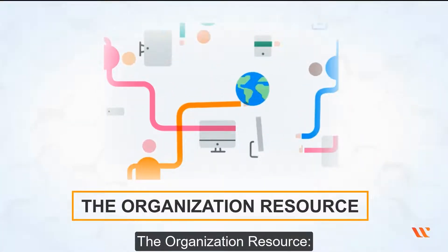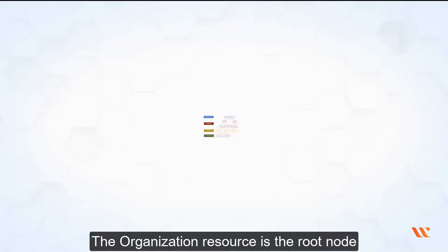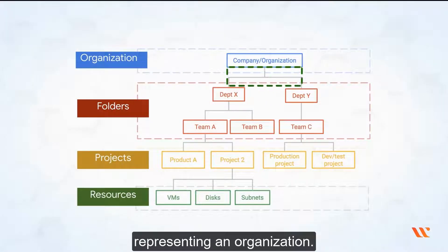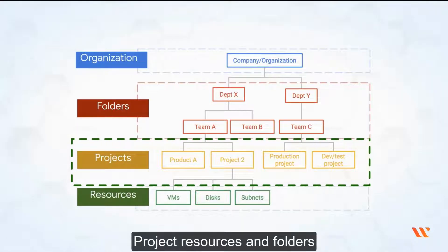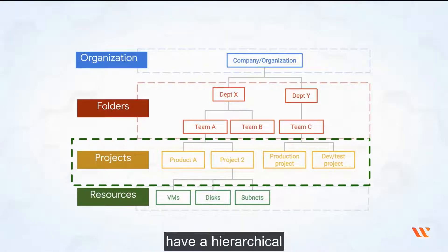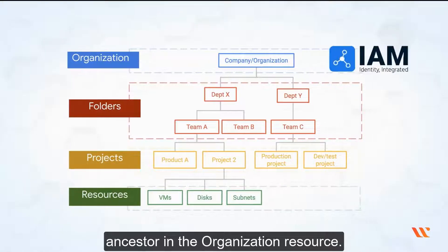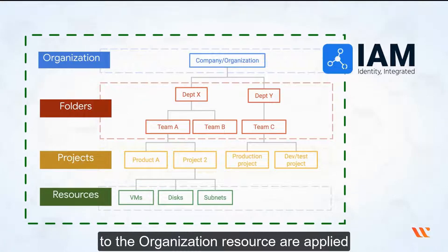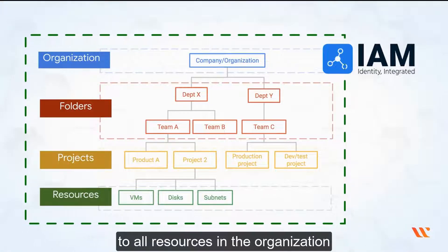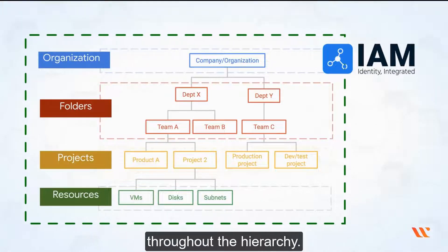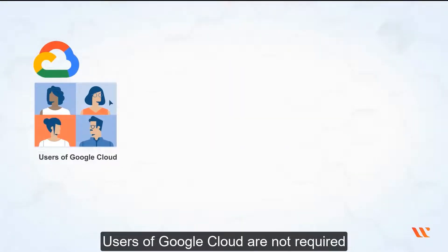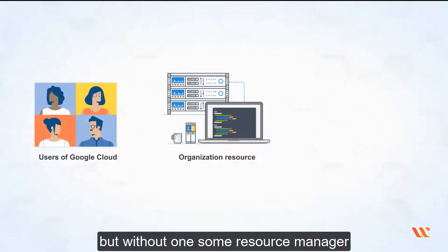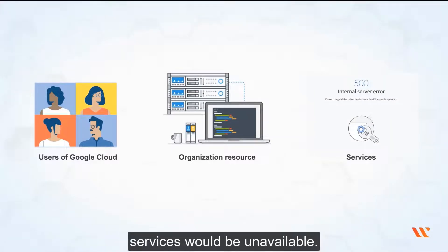The organization resource is the root node in the Google Cloud Resource Hierarchy, representing an organization. Project resources and folders have a hierarchical ancestor in the organization resource. The IAM access control policies applied to the organization resource are applied to all resources in the organization throughout the hierarchy. Users of Google Cloud are not required to have an organization resource, but without one, some resource manager services would be unavailable.